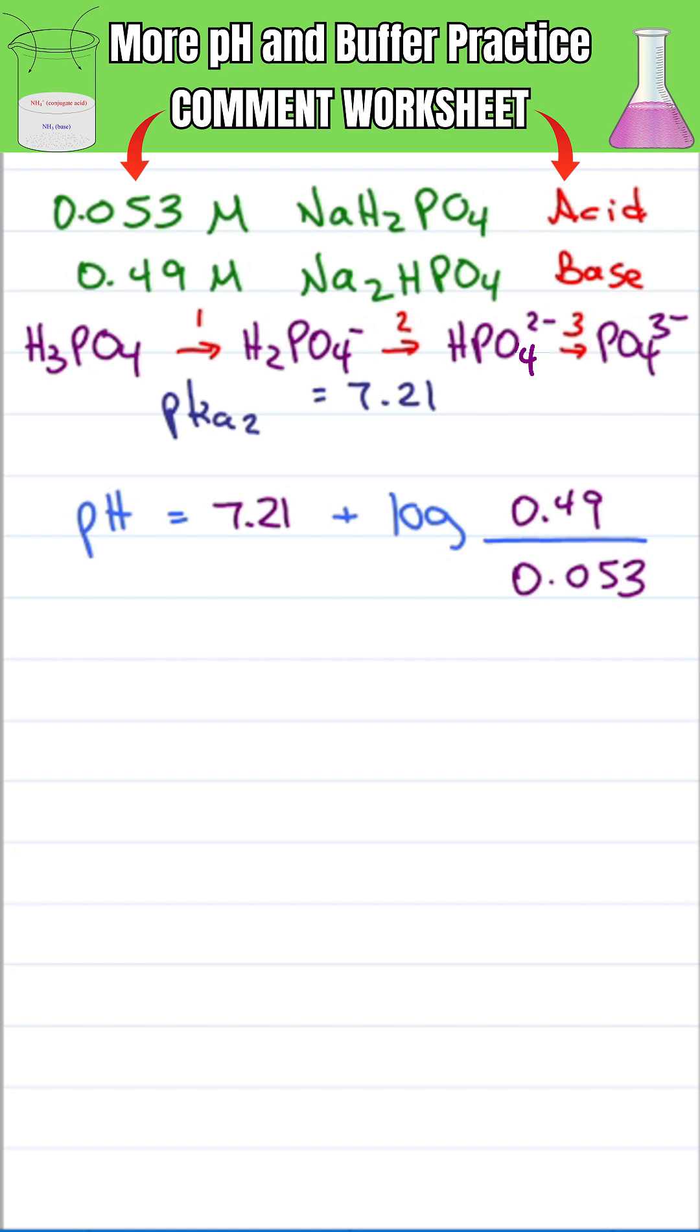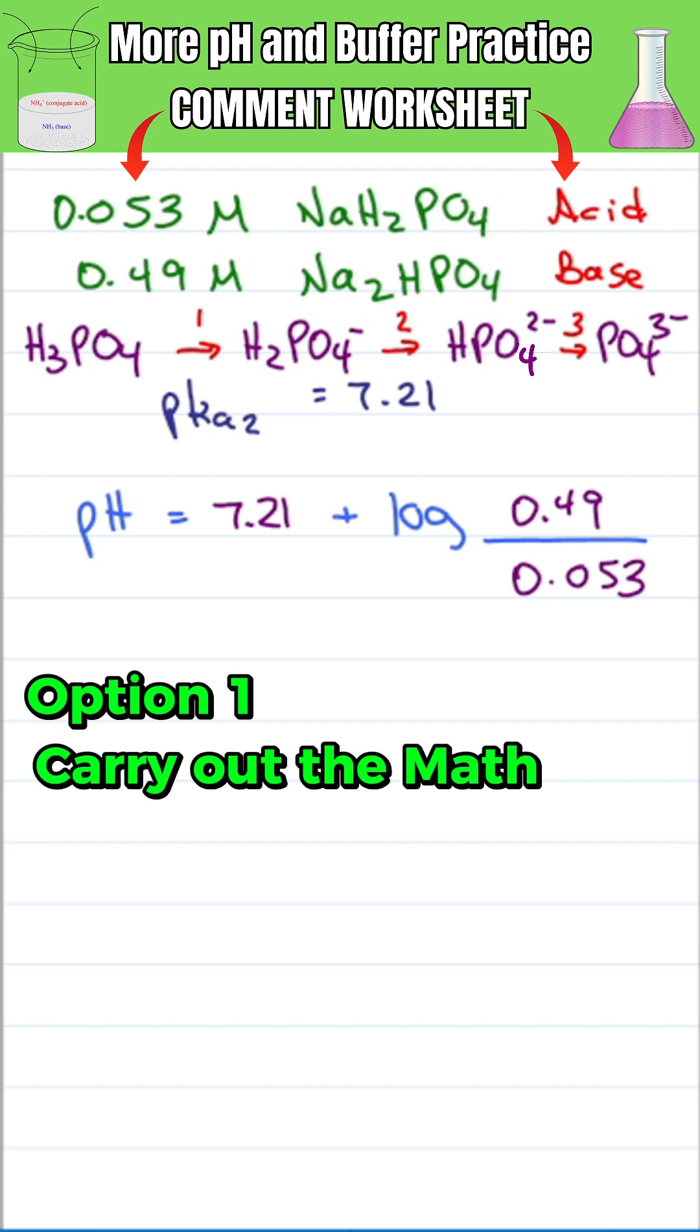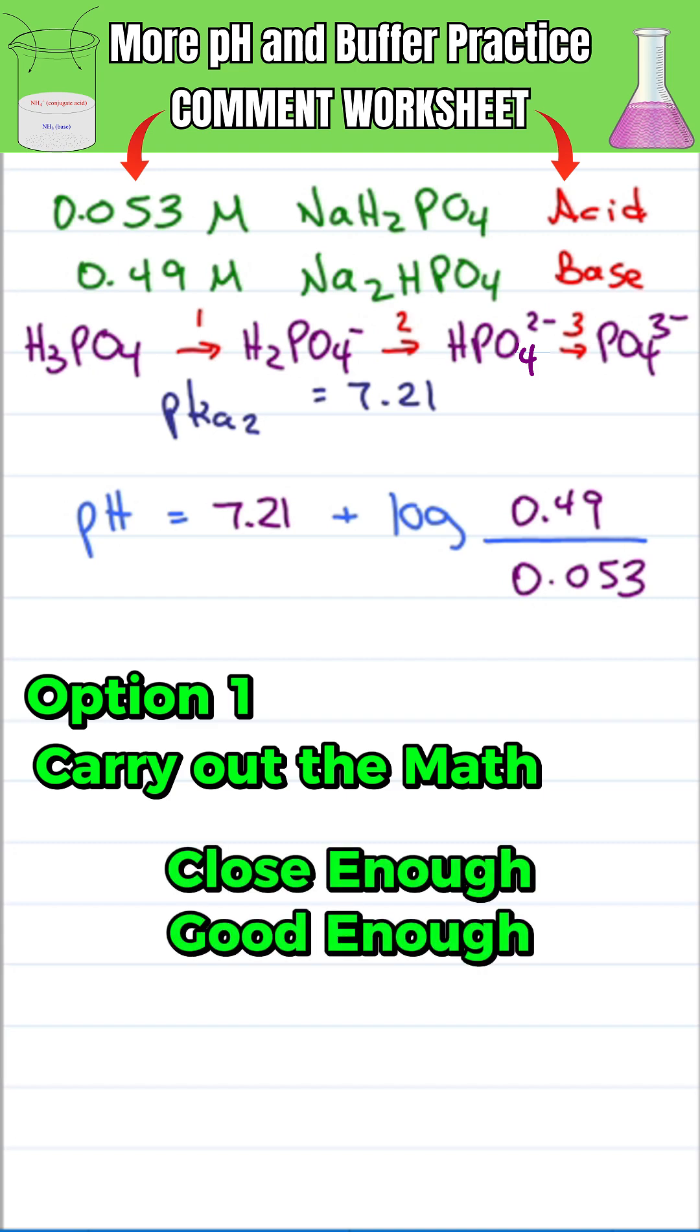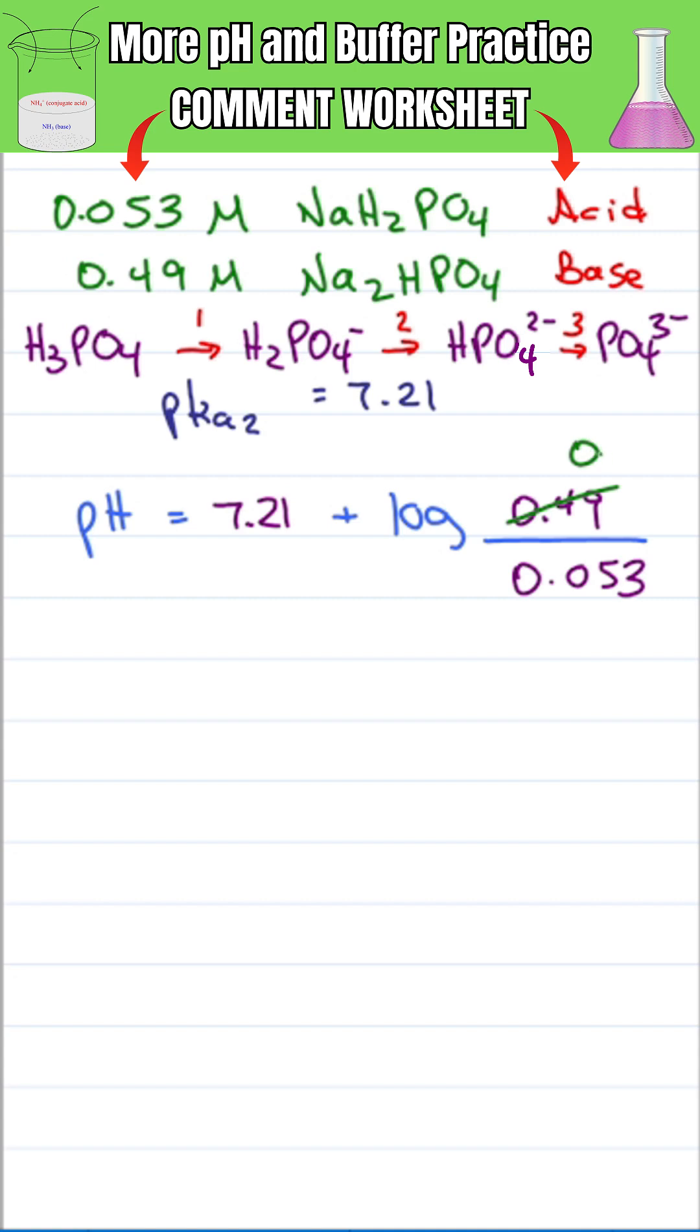We have two ways to solve this. Option one: we actually carry out the math where without a calculator close enough is good enough, so we'll round 0.49 to 0.5 and 0.053 to 0.05.